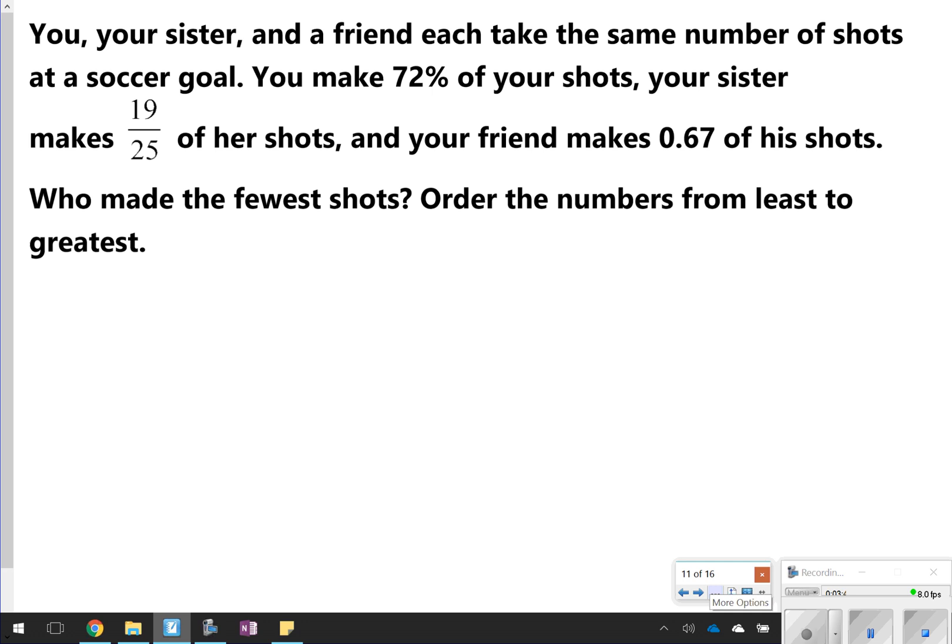So the next one, you're going to be reading some questions where there are three things, and you're going to put them in order from least to greatest. It says, you, your sister, and a friend take the same number of shots at a soccer goal. You make 72%. Your sister makes 19/25, and your friend makes 0.67. Who made the fewest shots? Order the numbers from least to greatest.